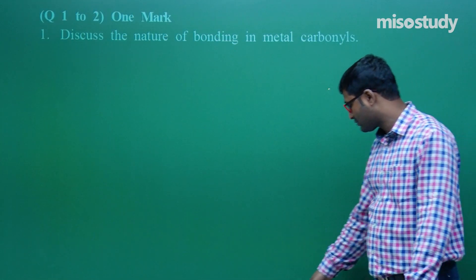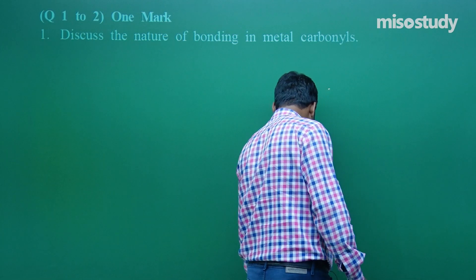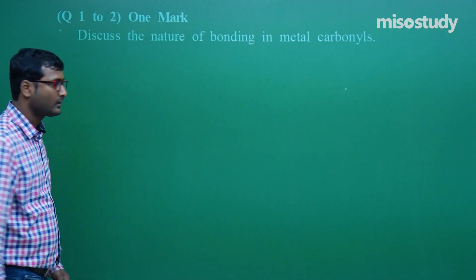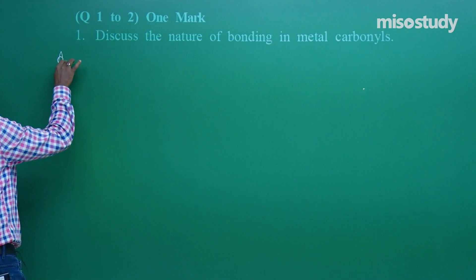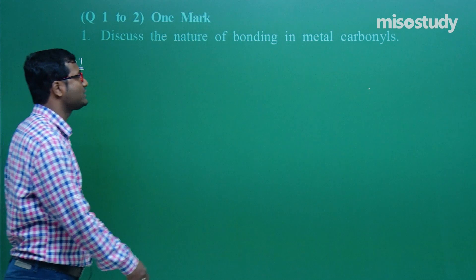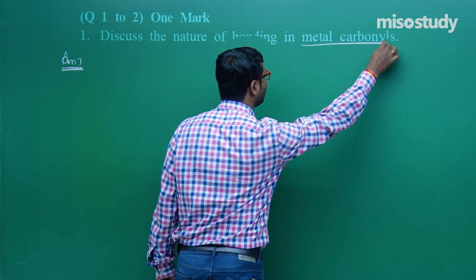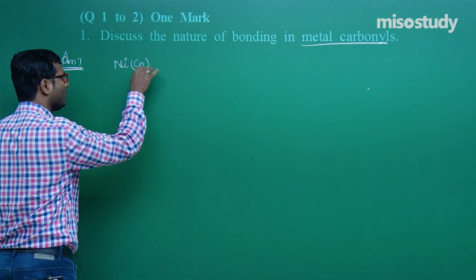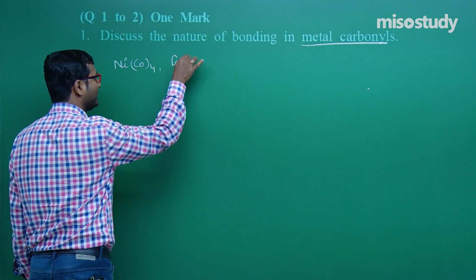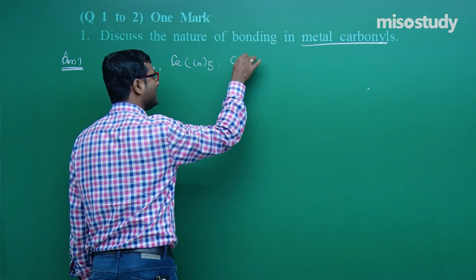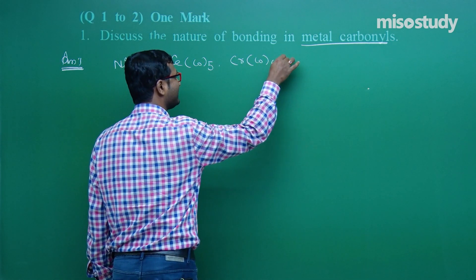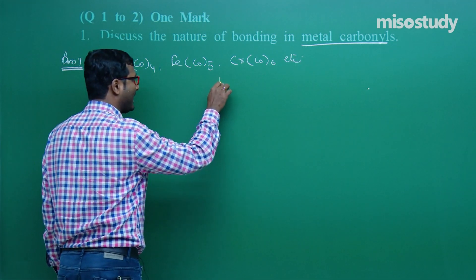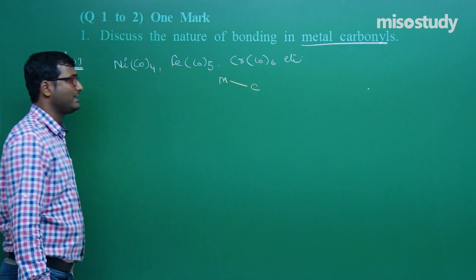Look at the first question: Discuss the nature of bonding in metal carbonyls. Do you remember the examples of metal carbonyls — Ni(CO)4, Fe(CO)5, Cr(CO)6, etc.? These are metal carbonyls, organometallic compounds — there is a metal-carbon linkage, meaning the metal is directly bonded to carbon.